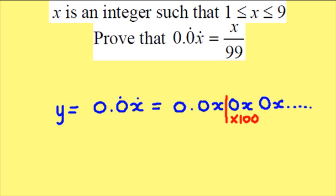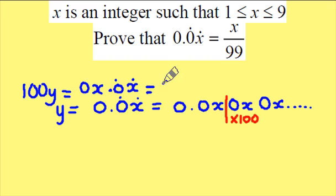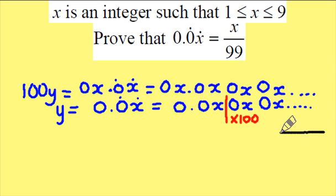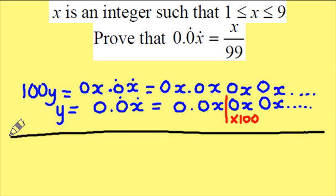So the whole top line times 100 produces 100y equals... Now it's 0x point 0x recurring, which leaves me with 0x point 0x 0x ensuring the digits are below each other going on forever. Subtracting one from the other, I know the x's when subtracted will produce 0 as will the 0s, leaving me only with my integer part of the solution.